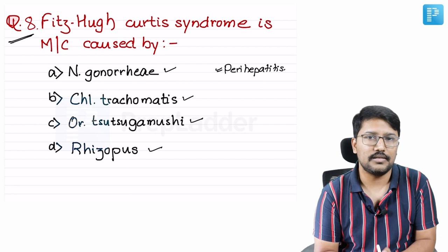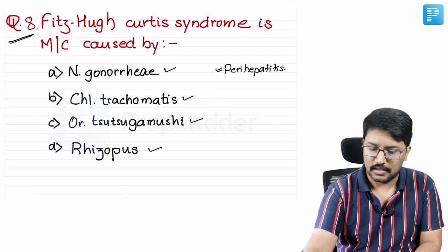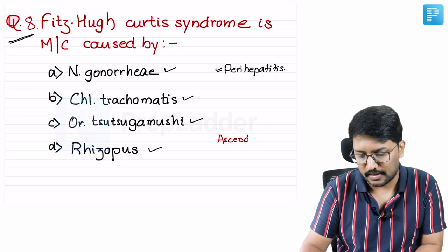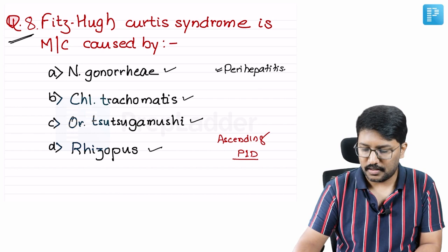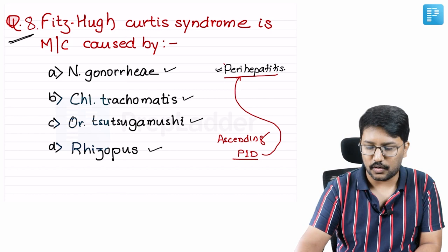Liver function tests are essentially going to be normal in these patients. This perihepatitis is a result of ascending infection from PID - the patient would have already developed pelvic inflammatory disease. From there, the ascending infection through the peritoneal cavity or through lymphatics reaches the liver capsule and causes perihepatitis.